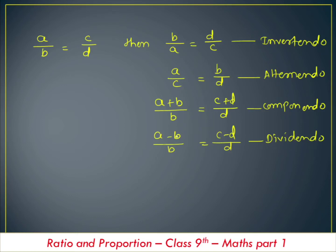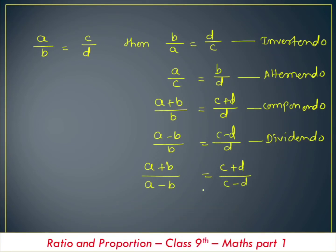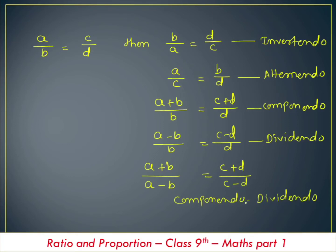Then the last property is the combination of the third and fourth. If a divided by b is equal to c divided by d, and if a plus b in the numerator divided by a minus b is equal to c plus d divided by c minus d, this property is called componendo-dividendo. So these are the five properties: invertendo, alternendo, componendo, dividendo, and componendo-dividendo.